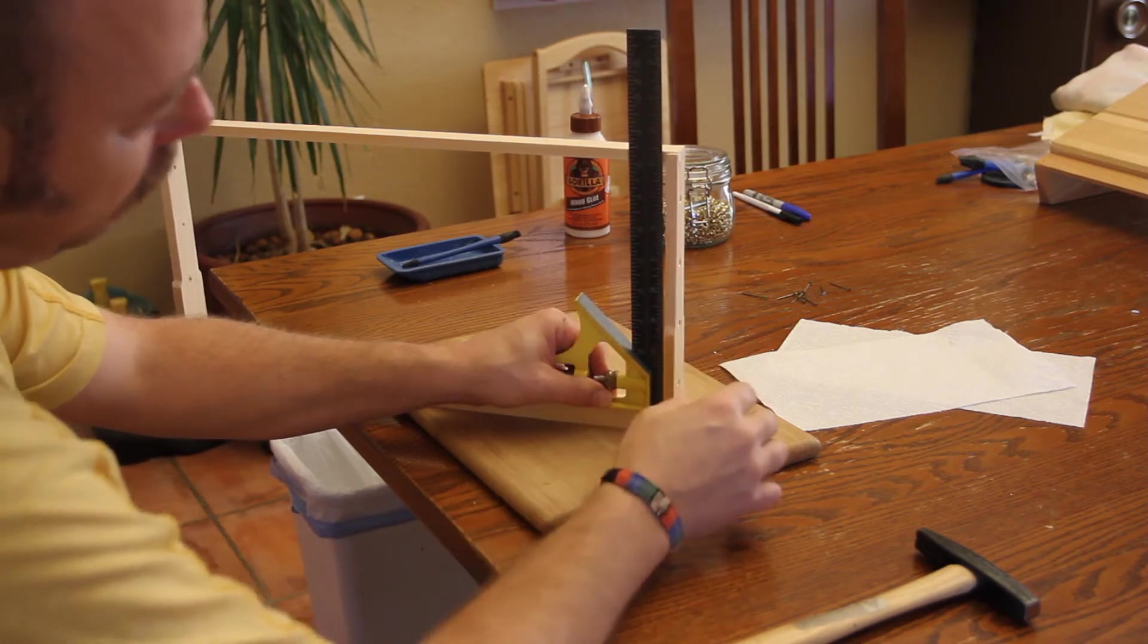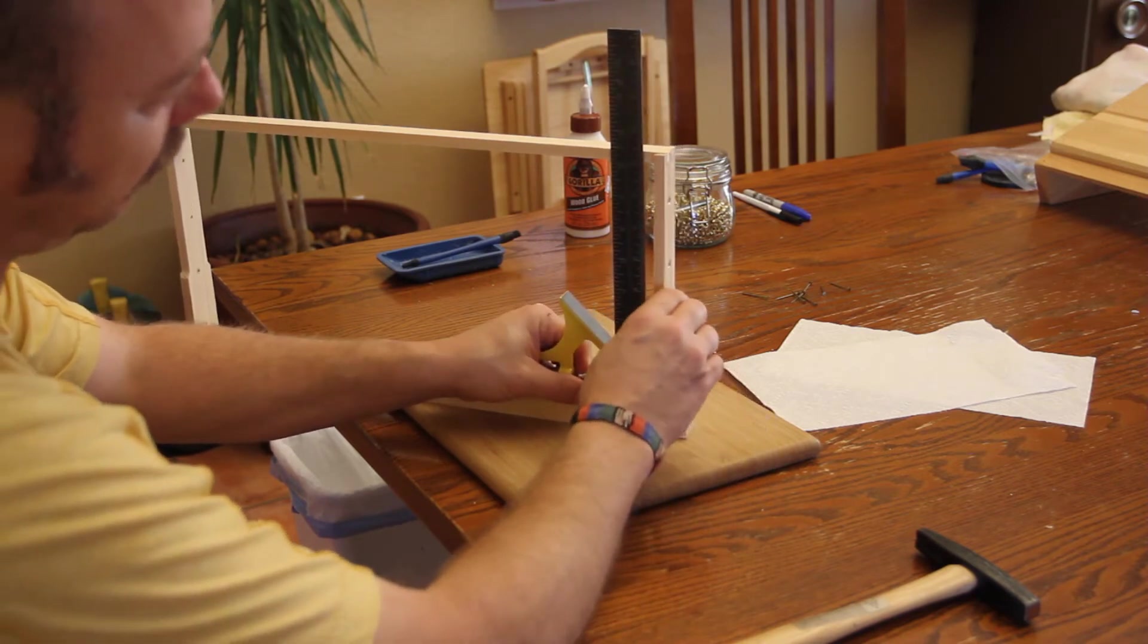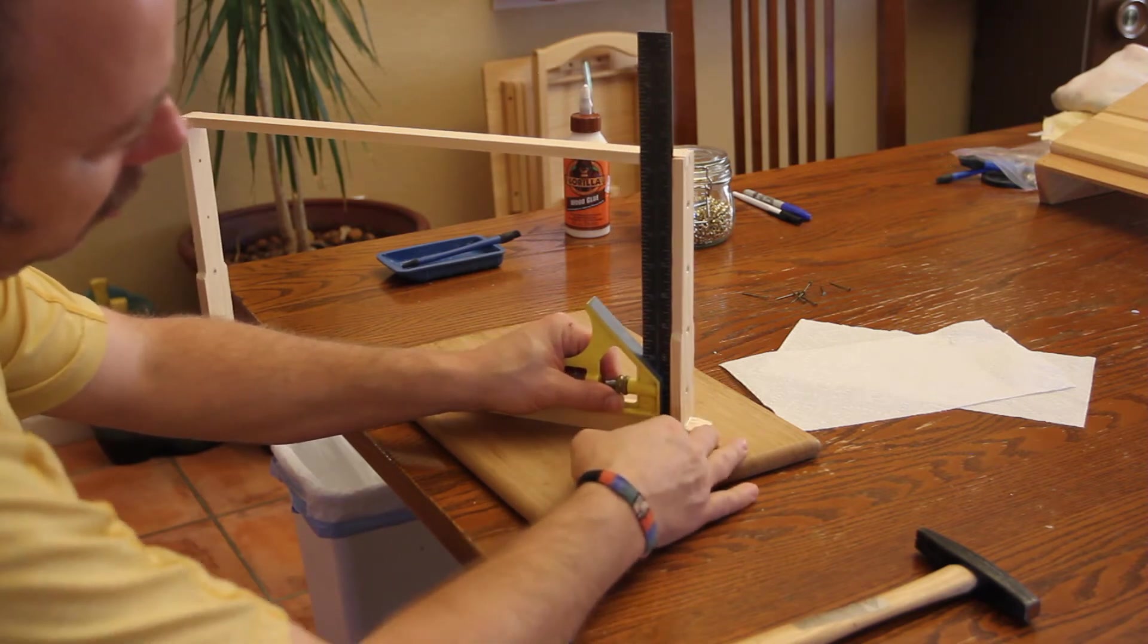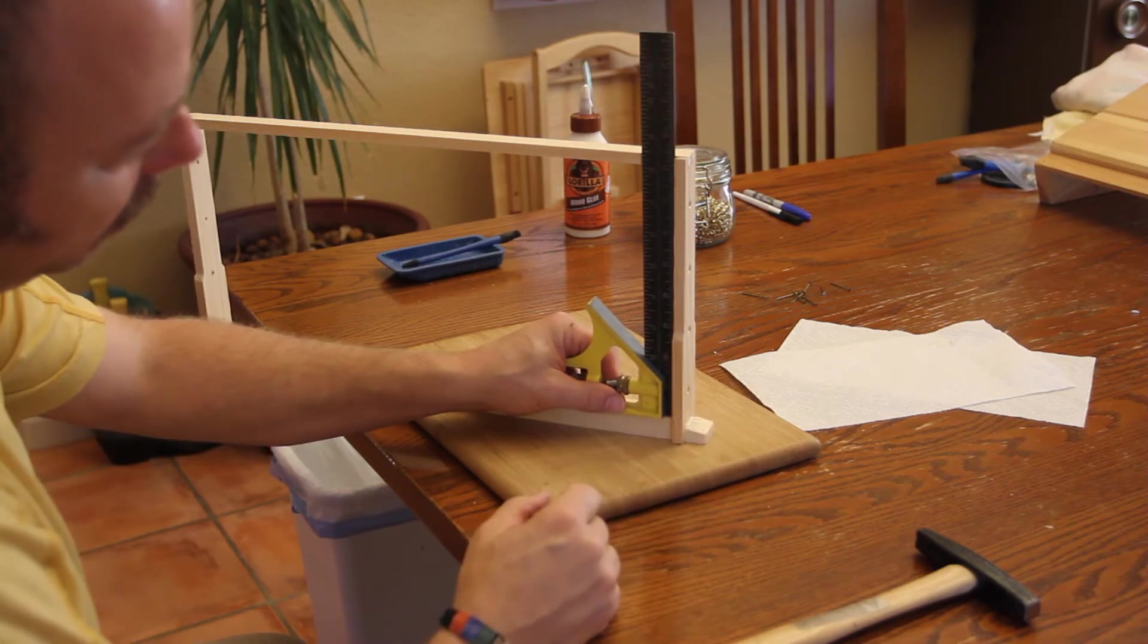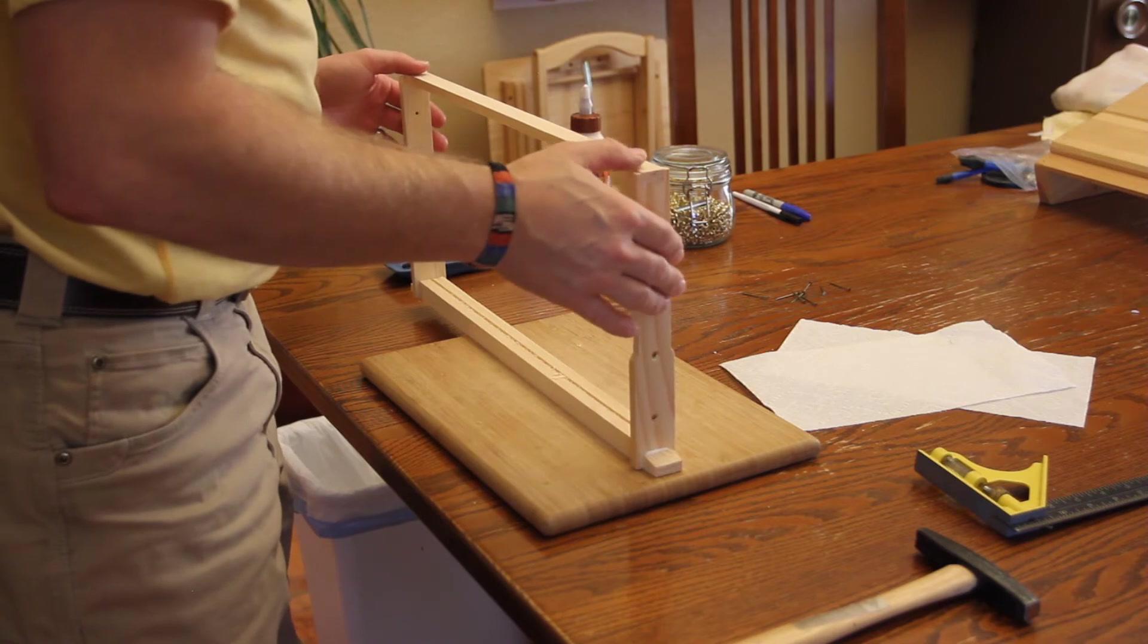If you push it over more, you can square it. The same thing happens if it's too far over this way—when there's a gap down here, push on the square and it'll square it up. That's perfectly square right there.